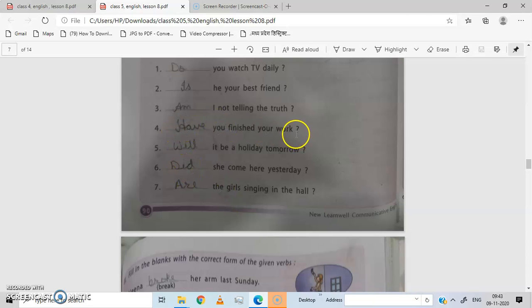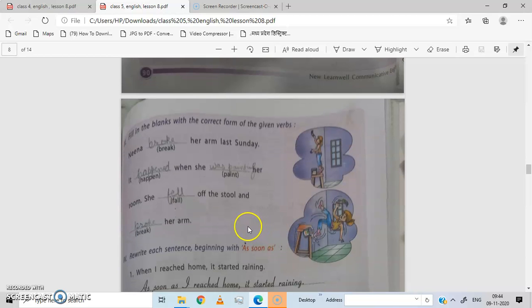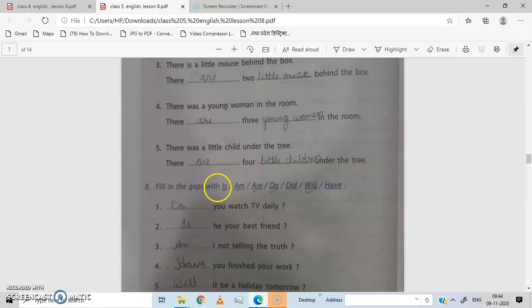Dash you finished your work? Have you finished your work? Dash it be holiday tomorrow? Tomorrow is future tense, will. Will it be a holiday tomorrow? She come here yesterday. Yesterday is past tense, so did. Did she come here yesterday? Dash the girls singing in the hall? It's plural, so are. Are the girls singing in the hall? In this way we have to do this.